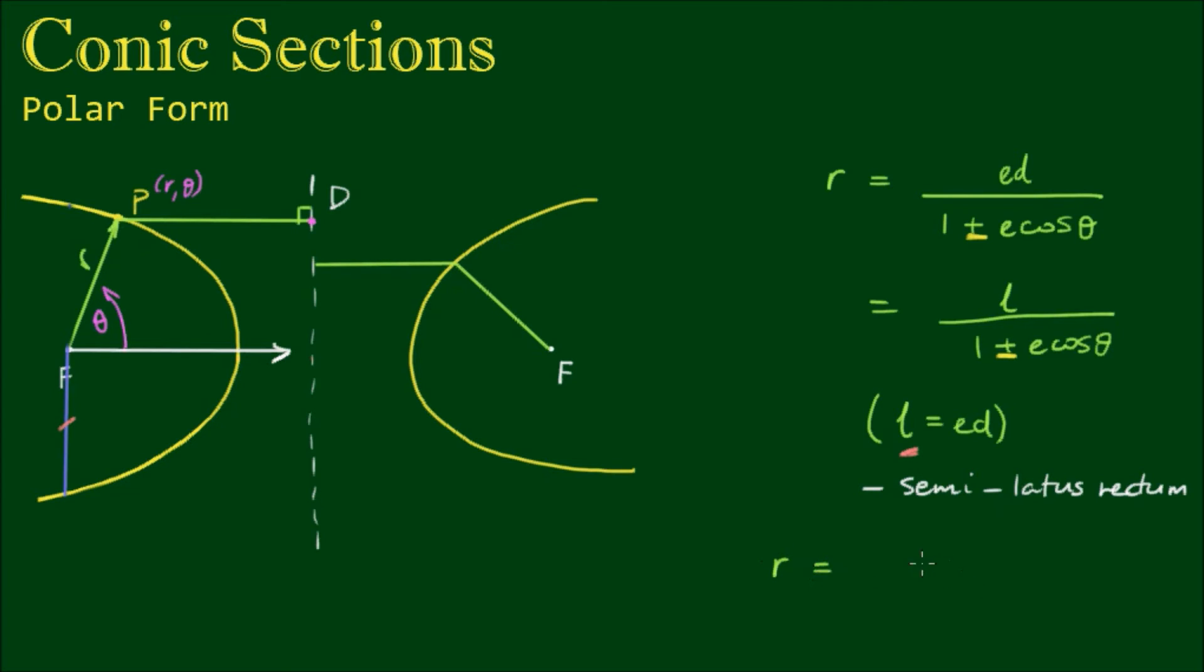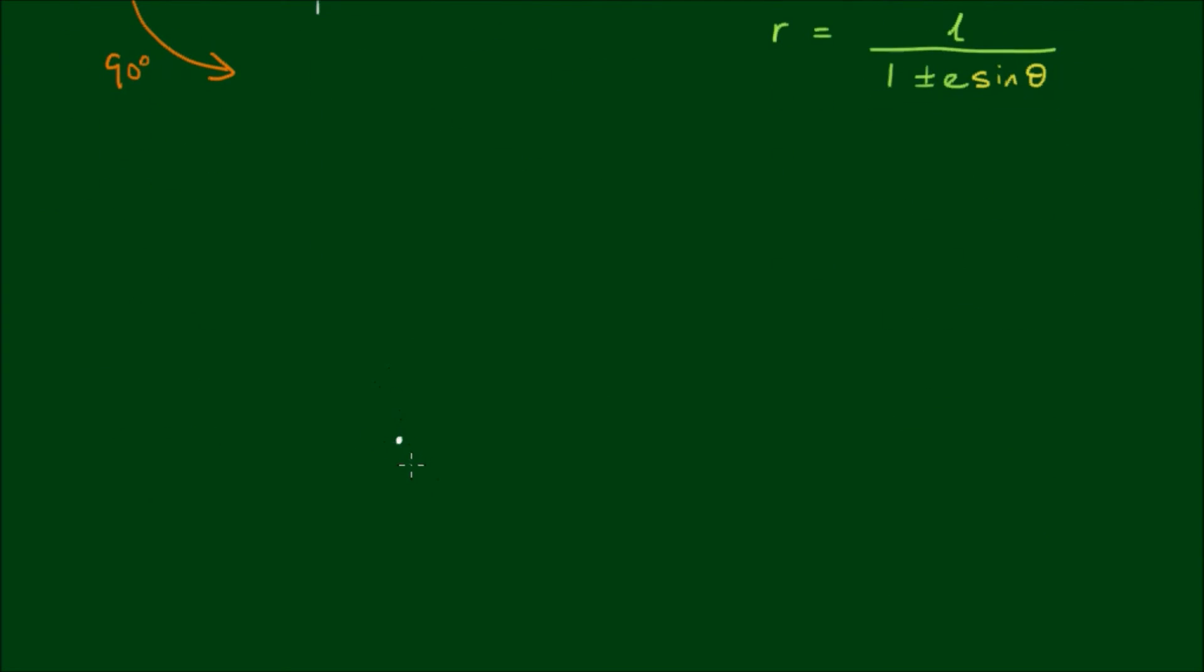Now another variation is that the equation can be written as L on 1 plus or minus E, and instead of being cos θ, we have sin θ instead. And this happens when we take this geometry and we rotate it by 90 degrees. So if we still have the focal point at the pole and the polar axis still being horizontal, this time the directrix is parallel to the polar axis. So the directrix is horizontal as well, and the locus of point P is oriented in this fashion.